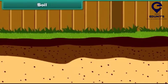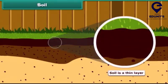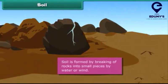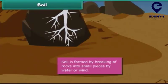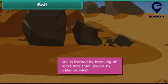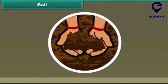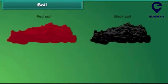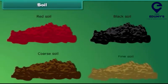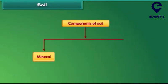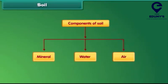Now we move on to another interesting topic — soil. Soil is a thin layer of the earth's crust. It is formed by the breaking of rocks into small pieces by the influence of water or wind. Soils are of different types such as red soil, black soil, coarse soil, and fine soil. Minerals, water, and air are the three important components of soil.